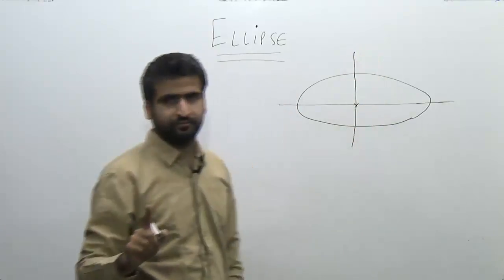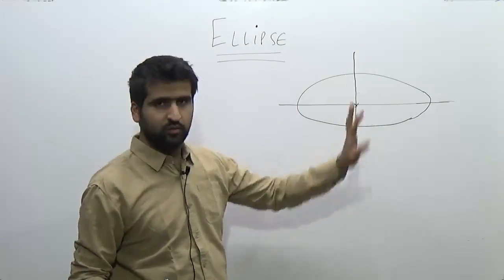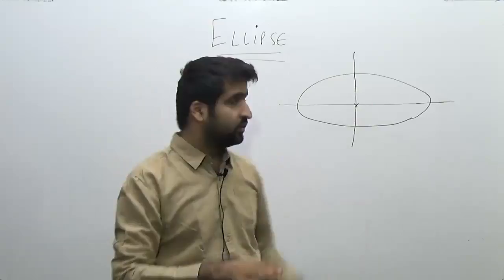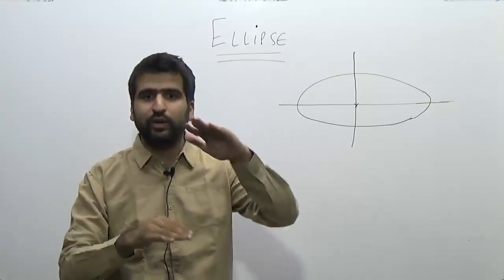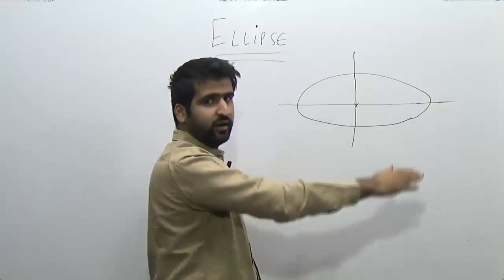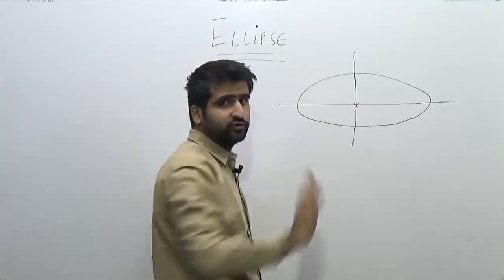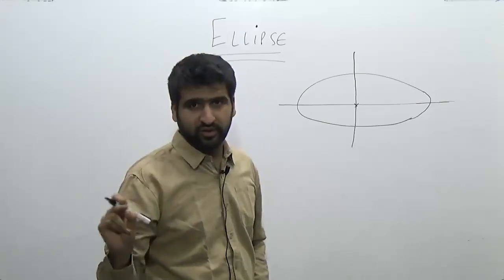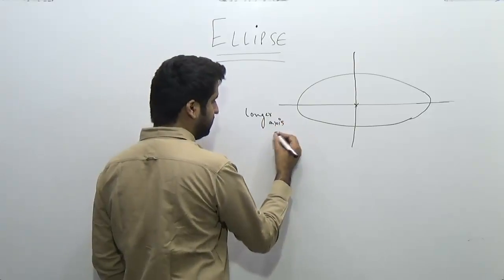An ellipse has one center, just as a circle has one center. This center is the point of intersection of two axes. An ellipse has two axes of symmetry — an axis of symmetry is a line which divides the shape into two equal parts. In the case of an ellipse, there are two axes: a horizontal axis and a vertical axis. The longer axis is called the major axis.